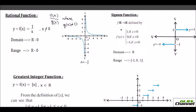You have a signum function where the relation is defined like this: when x is positive, your y is 1. When x is equal to 0, your y is also equal to 0. And when x is less than 0, that is when x is negative, the y value is always negative 1. So whenever you have a positive value for x, the y value is 1; when x is 0, y is 0; and when x is negative, y is constantly negative 1. The domain can be any number from negative infinity to positive infinity including 0, but the range has only three values: negative 1, 0, and positive 1.